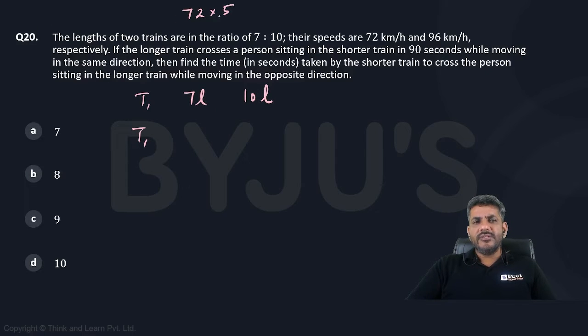So 72 means 72 into 5 by 18. I can say 20 meter per second is the speed and 96 means 96 into 5 by 18. So 96 is 18, 16, 96 is 96. It is 80 by 3 meter per second is the speed of the second train.